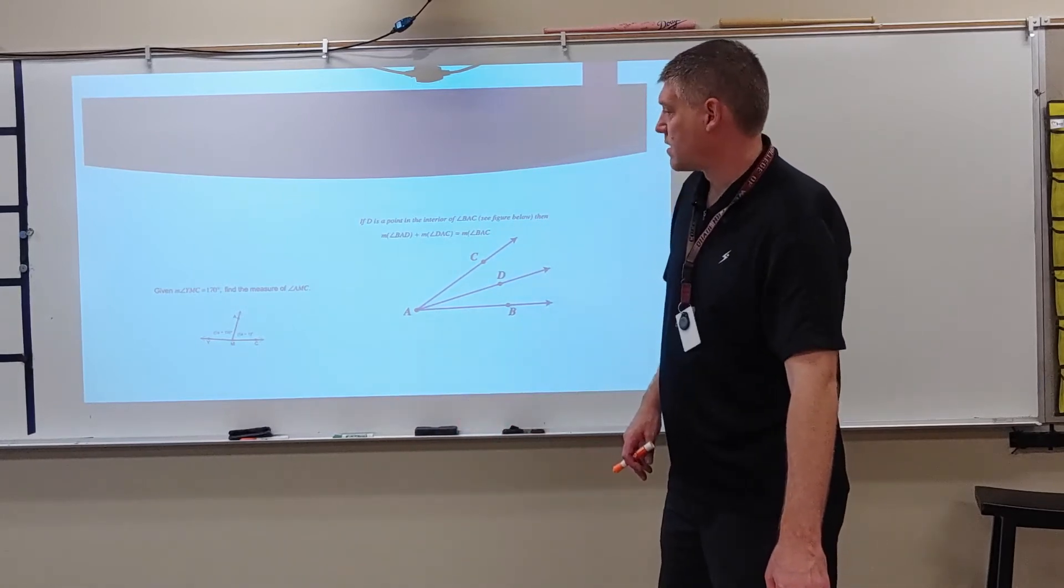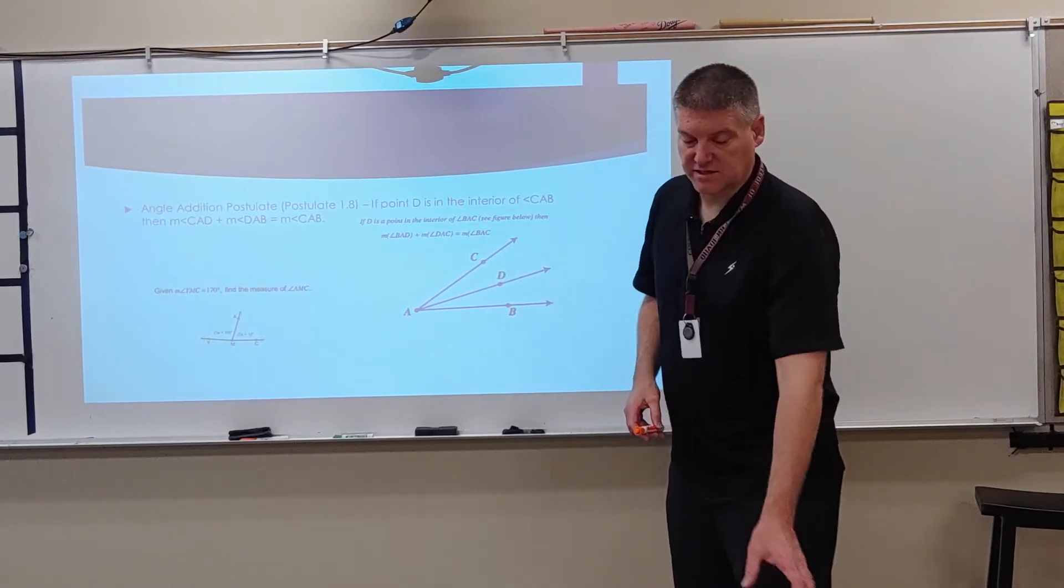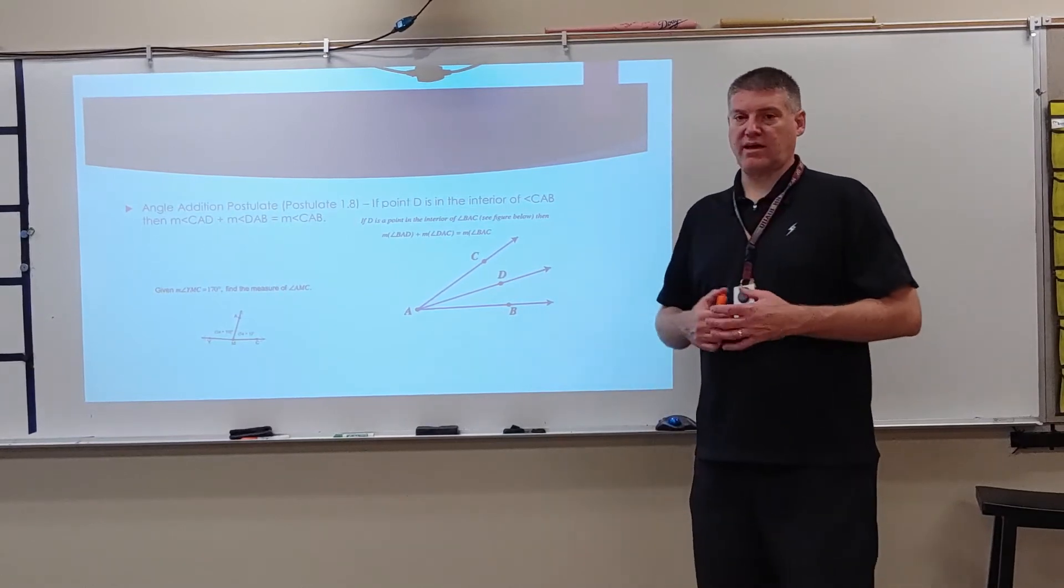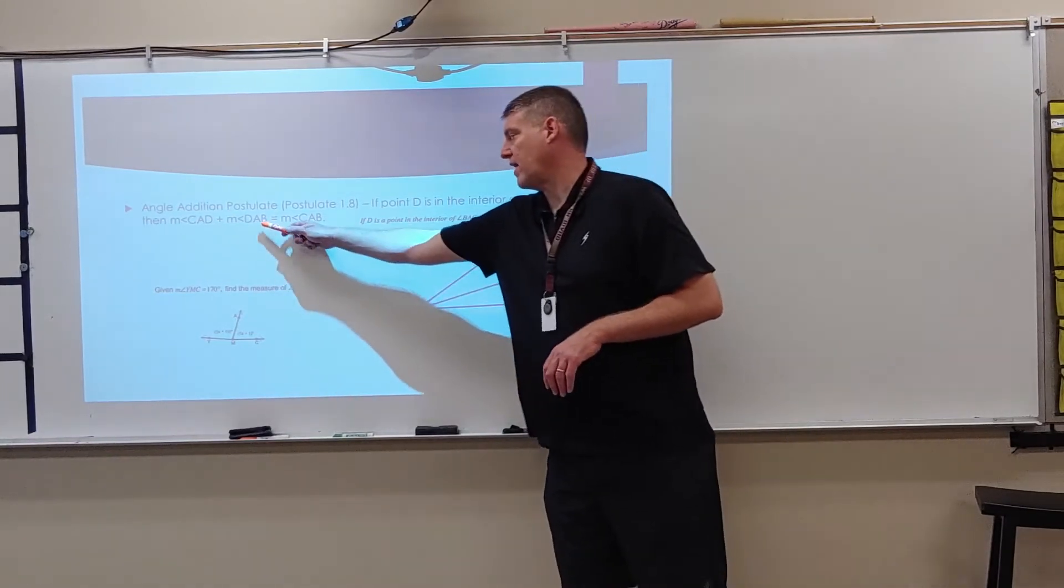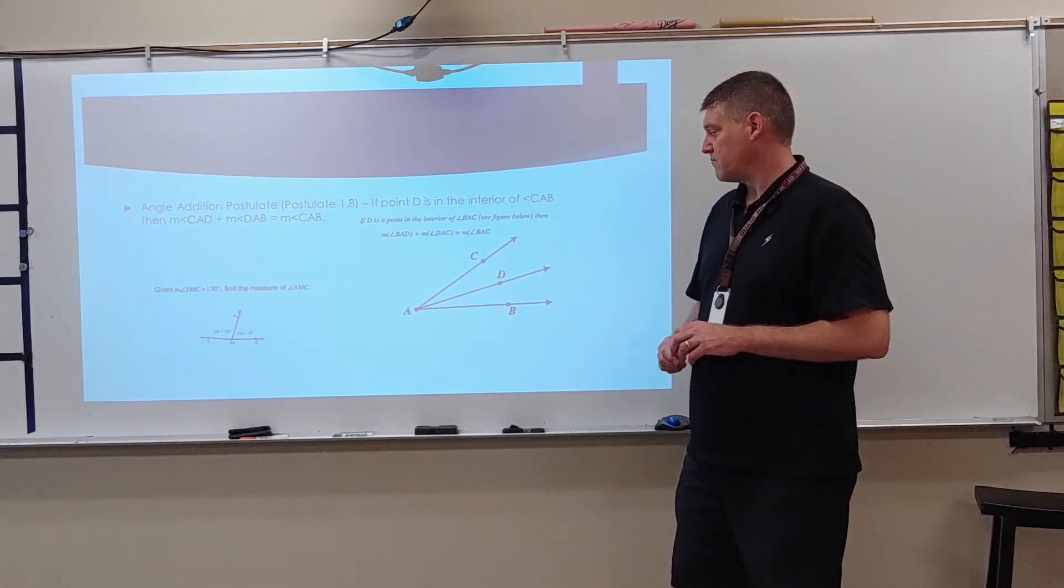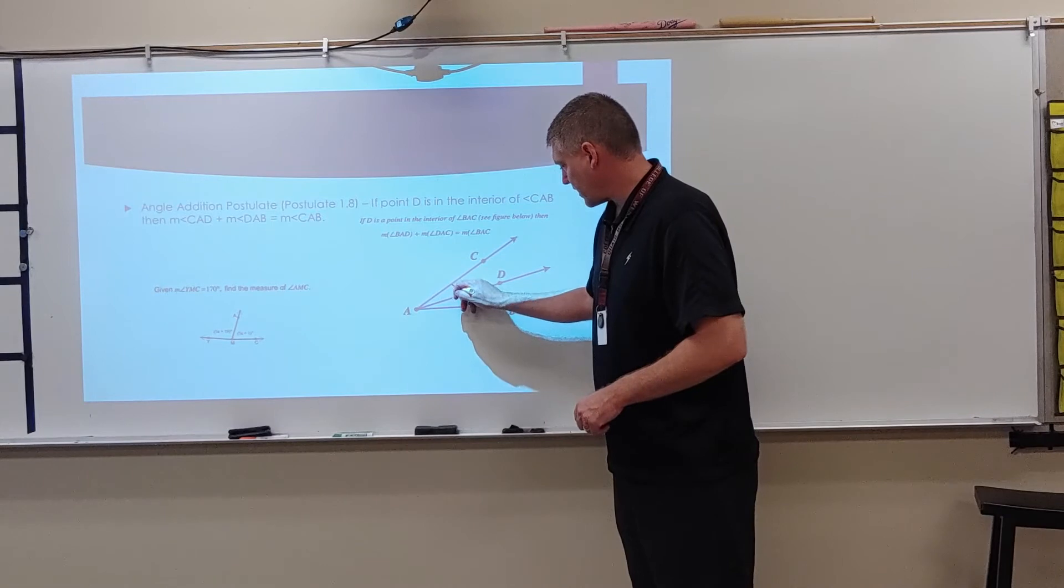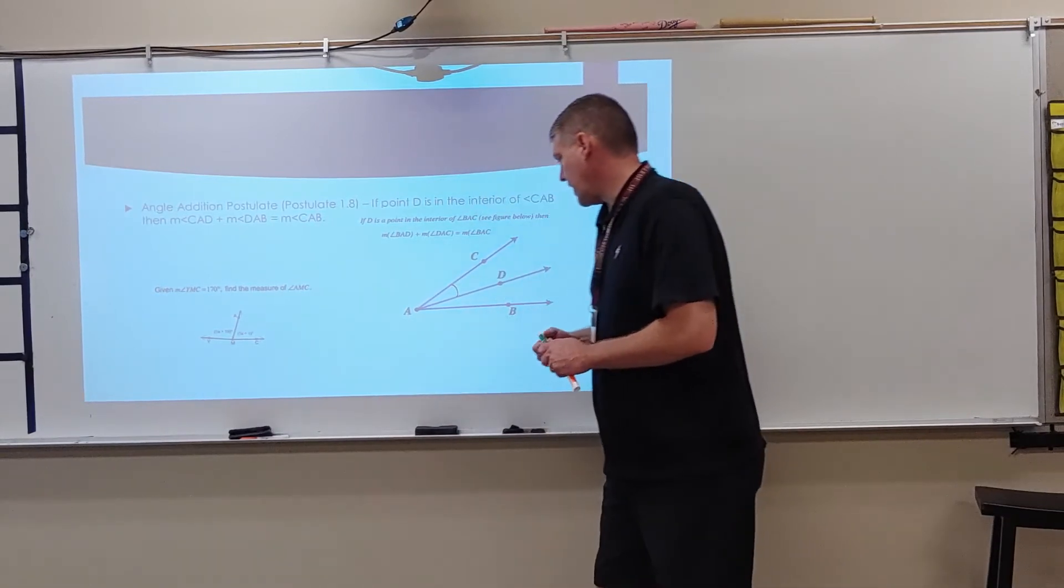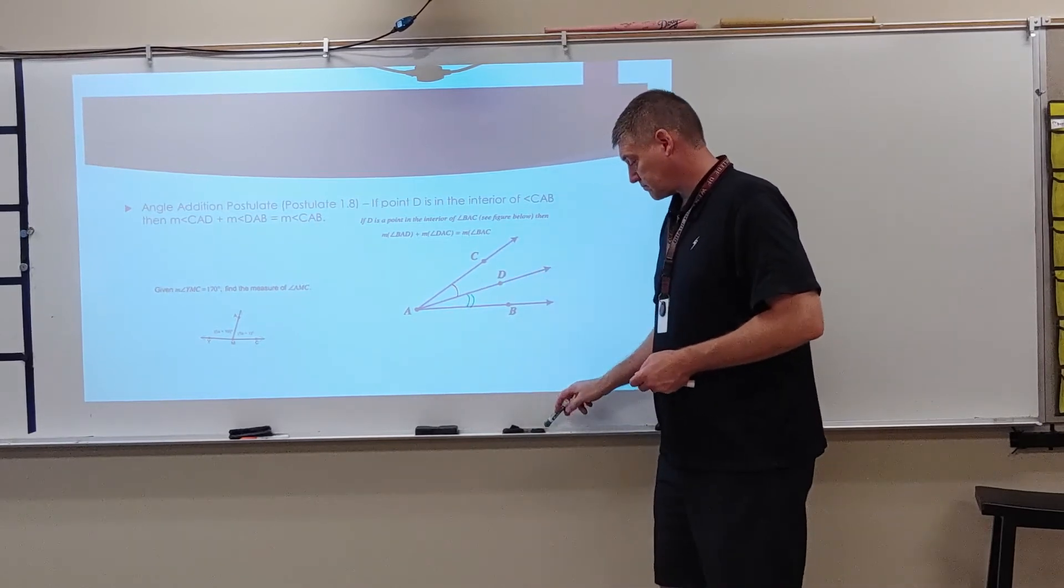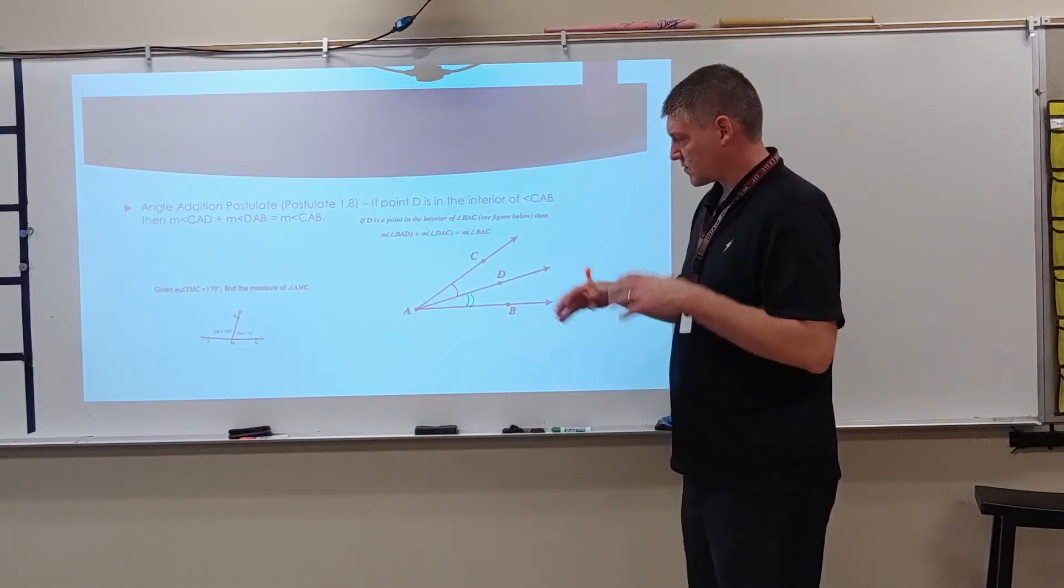All right. Here we're going to have the angle addition postulate. So if point D is in the interior of CAB, then the measure of angle CAB plus the measure of angle DAB is going to equal the measure of angle CAB. So notice here what we're seeing is the sum of the parts adds up to the whole. So this angle right here and this angle are going to add up to the entire angle. All right. It's very important that you understand that, how to kind of come up with that.